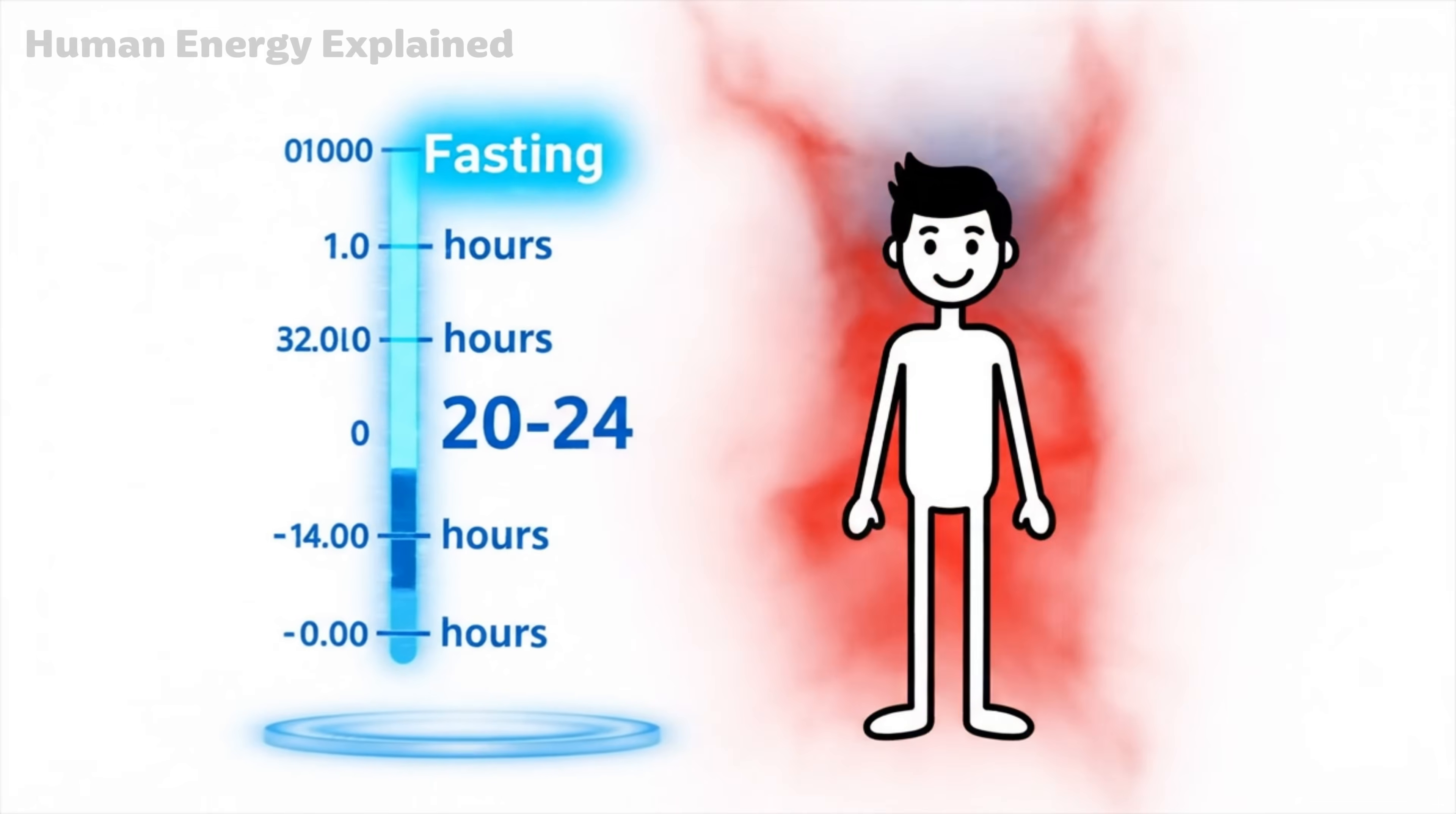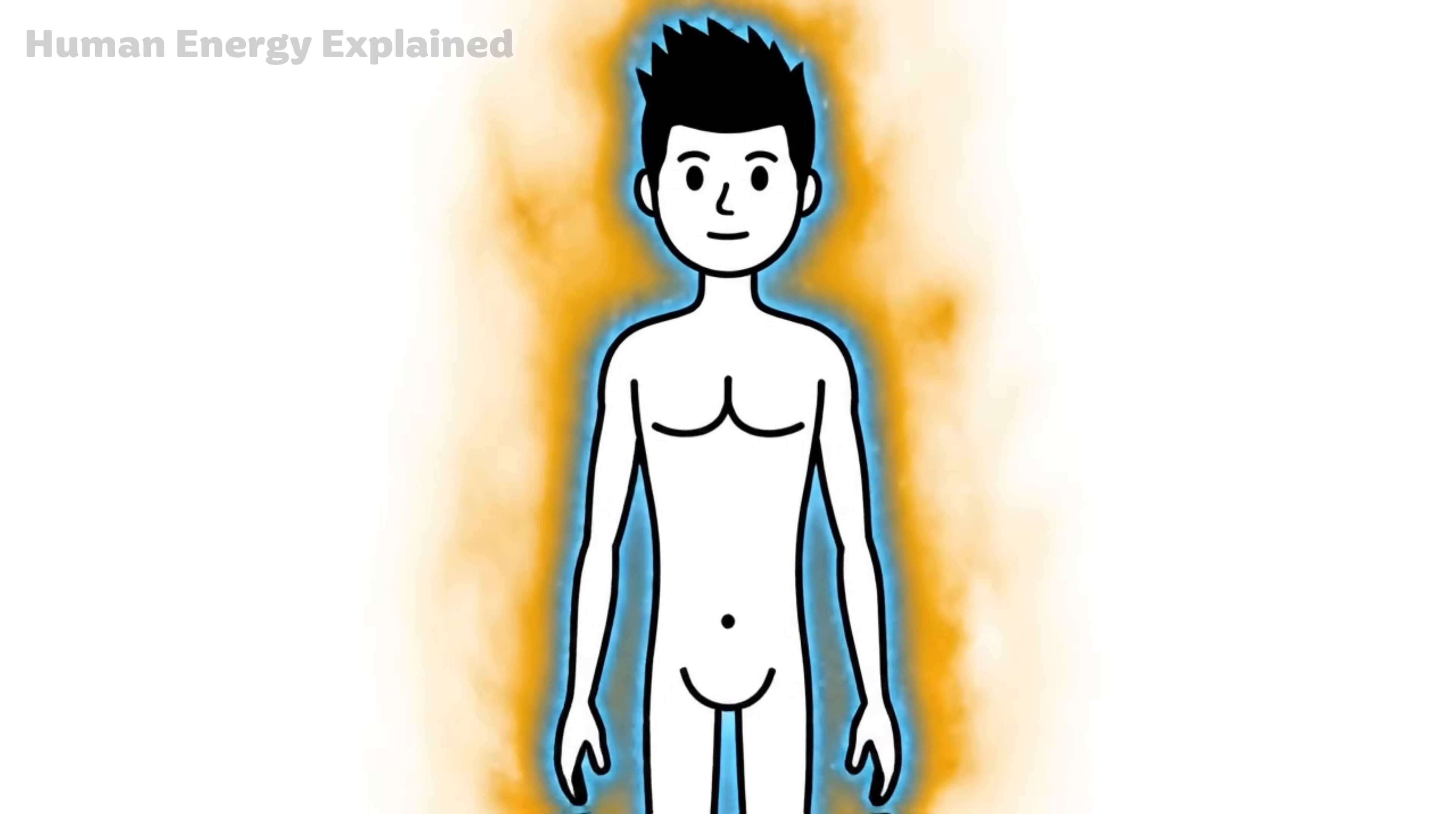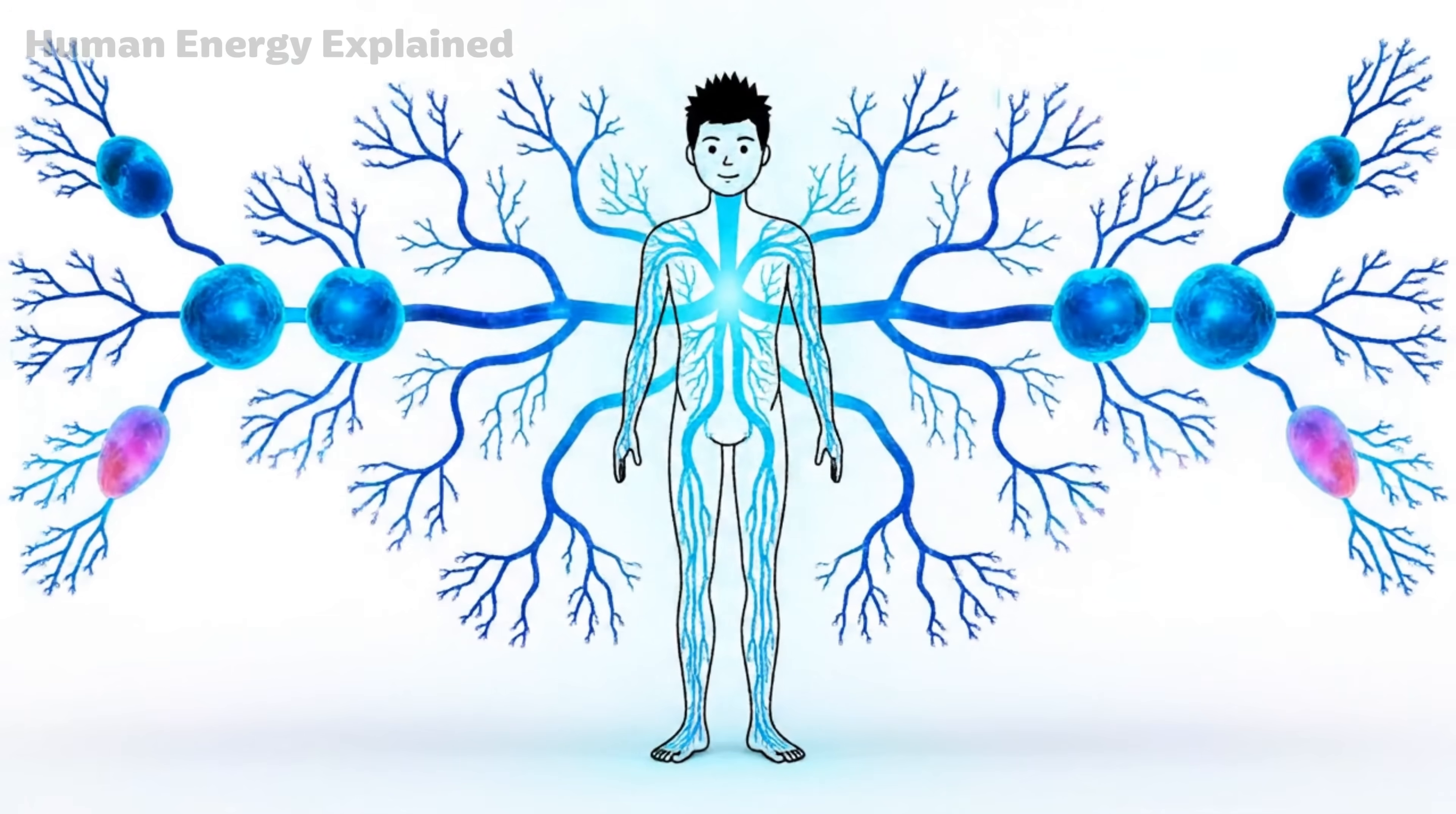By hour 20 to 24, most fasters report a surprising shift. The hunger that dominated those early hours has faded almost entirely. Energy feels stable, cravings disappear. There's a sense of control that's hard to describe until you've experienced it. You realize how much of your day used to revolve around food. Thinking about it, planning it, eating it. And now that noise has quieted. Your body isn't panicking, it's optimizing.